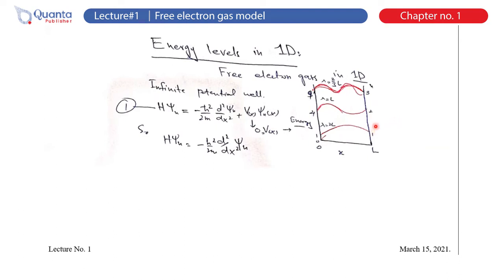If you write the equation, the potential energy plus kinetic energy equals the total Hamiltonian — even in the classical scenario, total energy equals potential plus kinetic energy. This energy is given by: minus h-bar squared over 2m times d²/dx², which is the kinetic energy, plus potential energy V(x). In case of free electrons, V(x) equals zero.